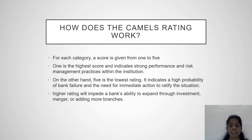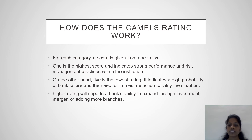How does the CAMELS rating work? For each category, a score is given from 1 to 5. A score of 1 is the highest and indicates strong performance and risk management practices within the institution. On the other hand, 5 is the lowest rating, indicating a high probability of bank failure and the need for immediate action to rectify the situation. A higher rating will impair a bank's ability to expand through investment, merger, or adding more branches.